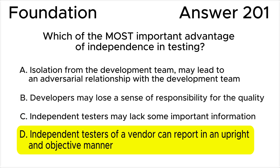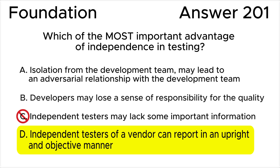Answer C is incorrect. While independent testers may not have access to certain internal details or context about the development process, this limitation does not outweigh the importance of their objectivity and impartiality. Independent testing focuses on providing an unbiased assessment of the software's quality based on the available information and test objectives.